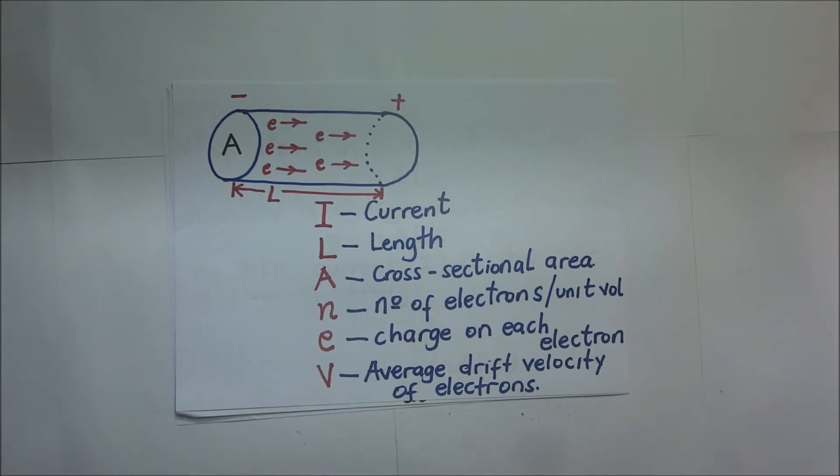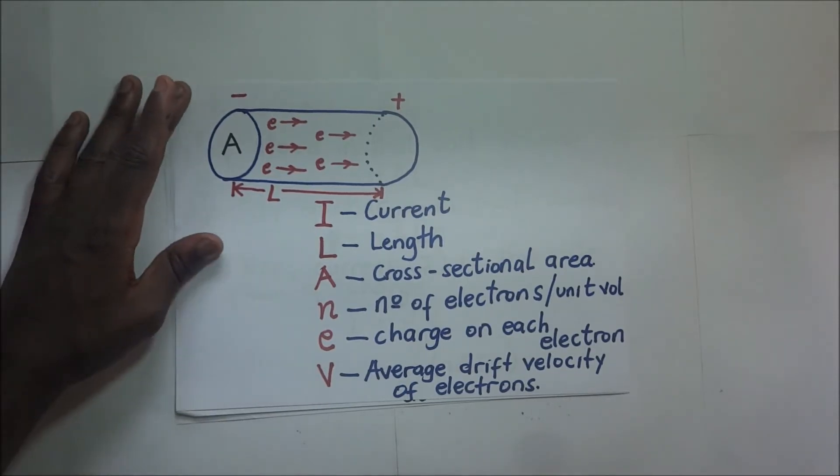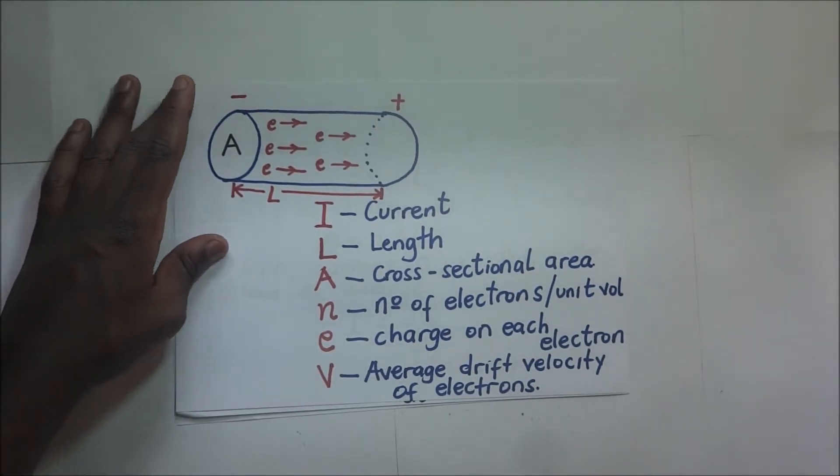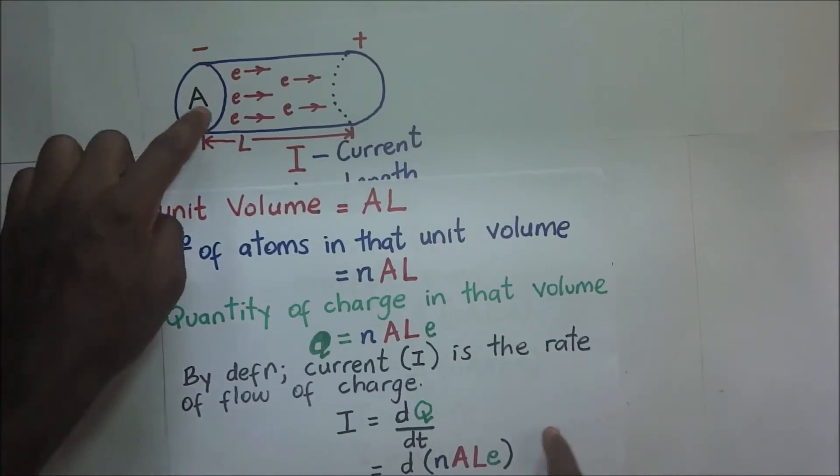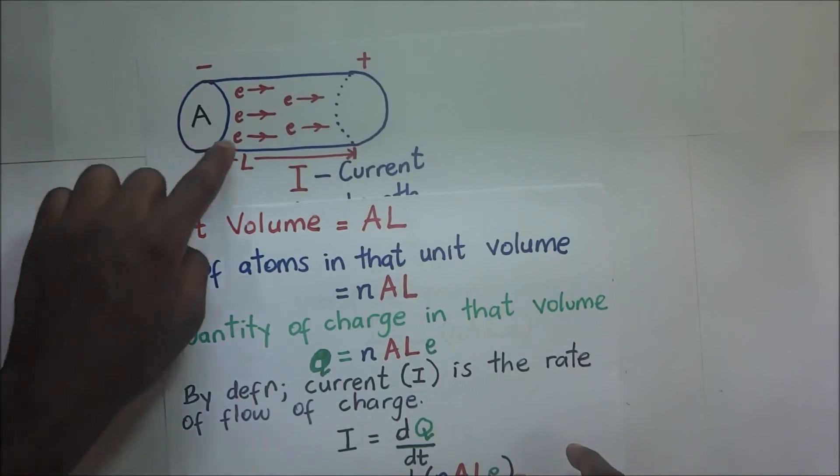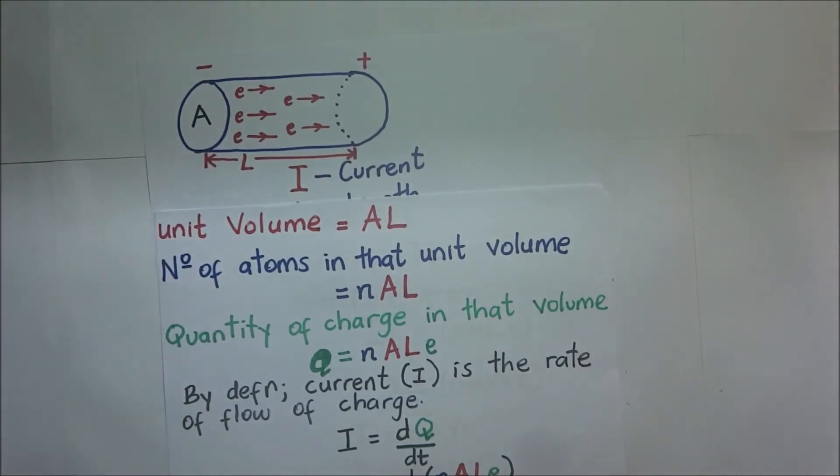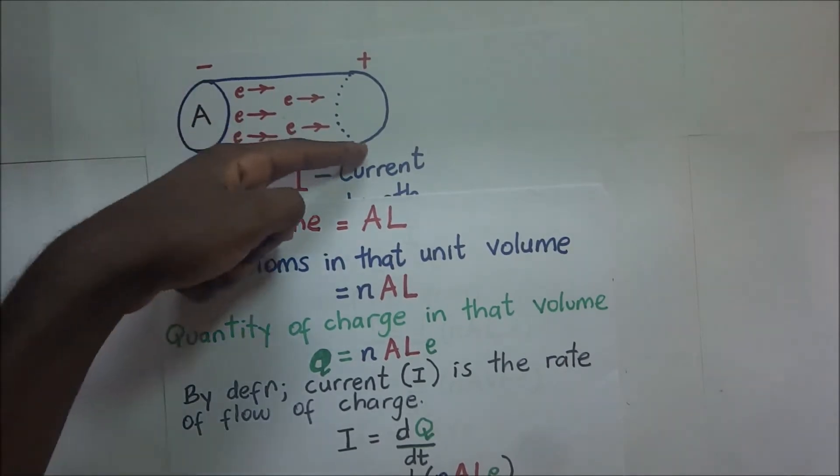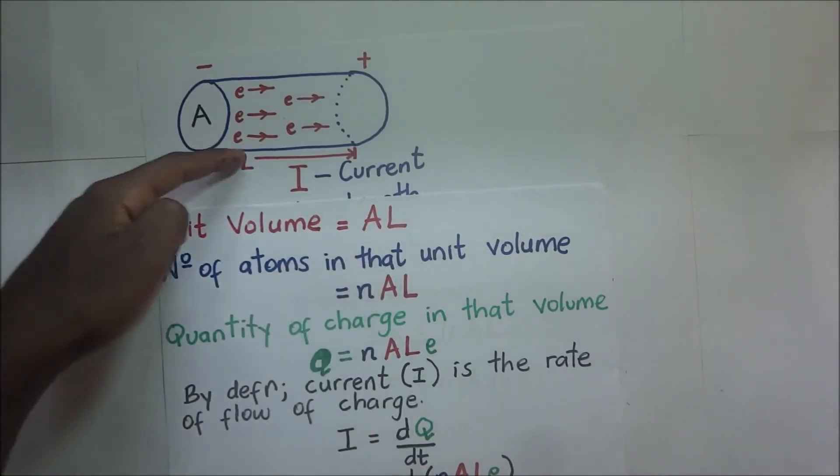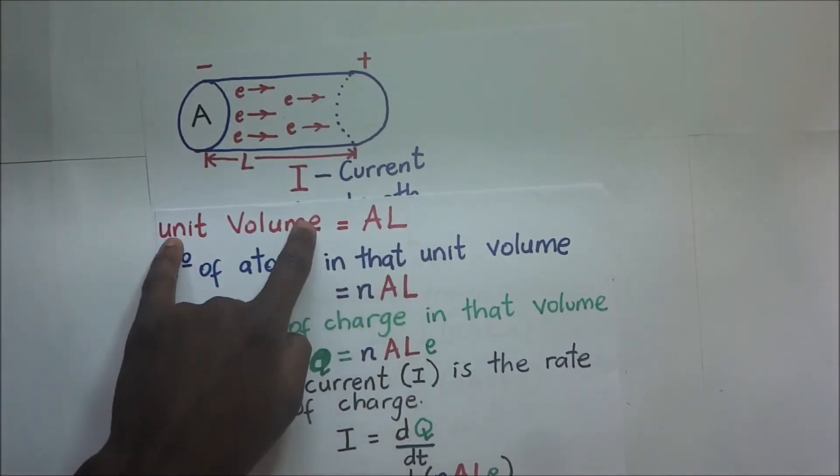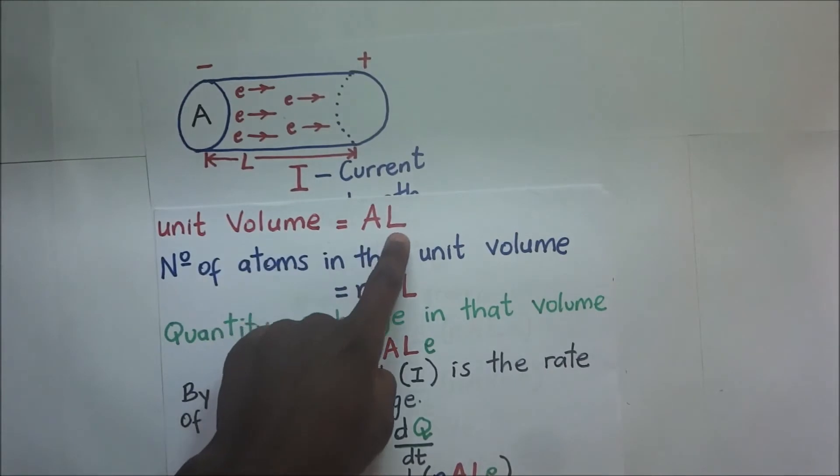E is going to be the electron charge on each electron in that unit volume. Then V will be the average drift velocity of the electrons. And so diving into the derivation, we'll begin with considering a unit volume. We know that this wire or this conductor is in the form of a cylinder. And we know that the volume of the cylinder is given by cross-sectional area times the length.